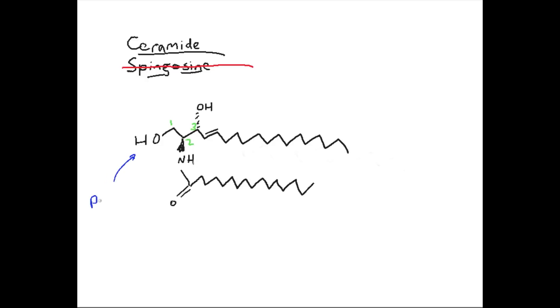And here on the C1 carbon is when you get attachment to here, this is called the polar head group. And it's polar obviously because you kind of start forming a dipole this way. And when you get different things attached to the polar head group, that's how you get different classifications of sphingolipids.